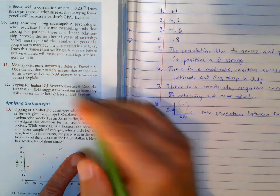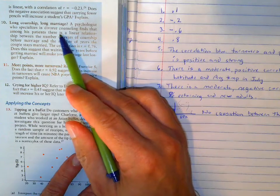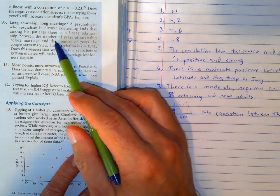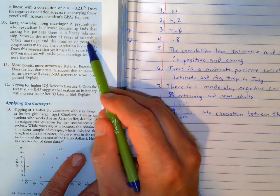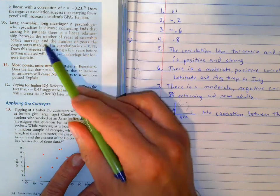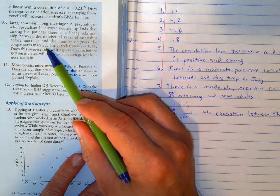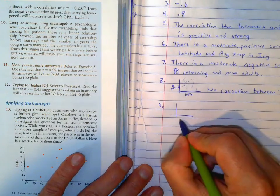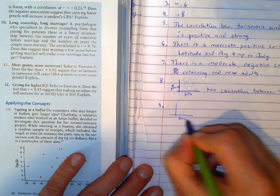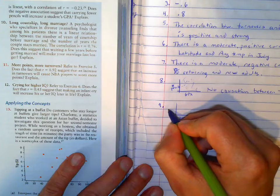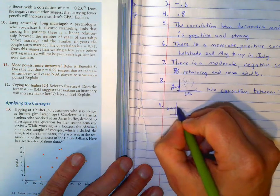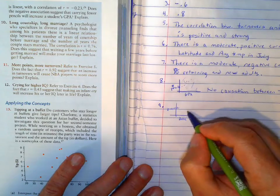The next one, they looked at, specializes in divorce. There was a linear relationship. Years of courtship, meaning dating, before marriage, and the number of years the couple stay married. So if you think about the graph here, how long people date and how the divorce rates. And they had a correlation of 0.76.